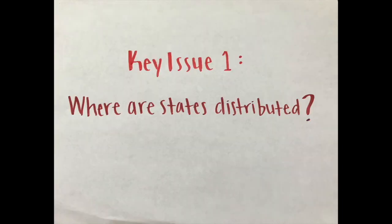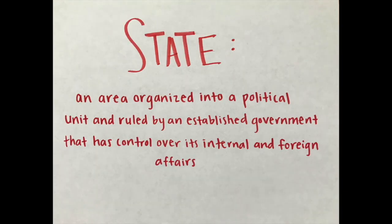Key Issue 1: Where are states distributed? A state is an area organized into a political unit and ruled by an established government that has control over its internal and foreign affairs. It occupies a defined territory on Earth's surface and contains a permanent population. A state has sovereignty, which means independence from control of its internal affairs by other states.